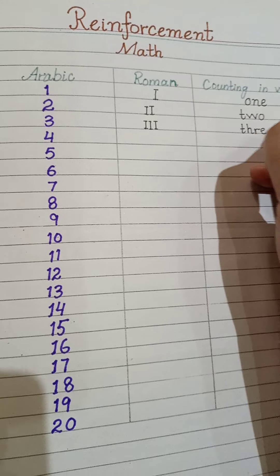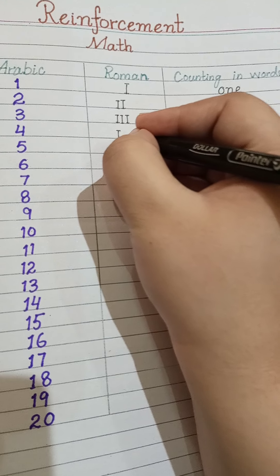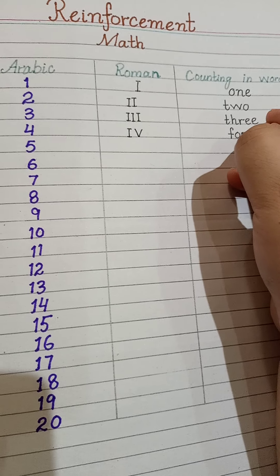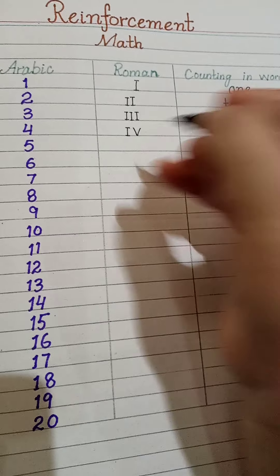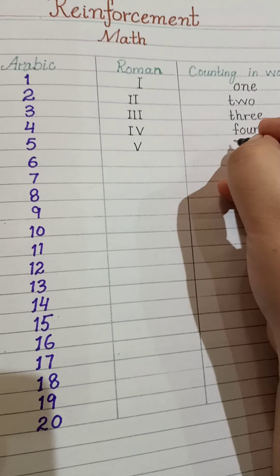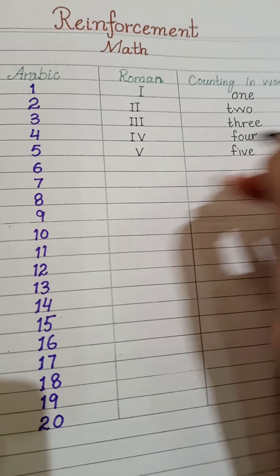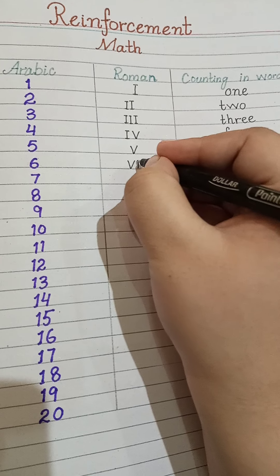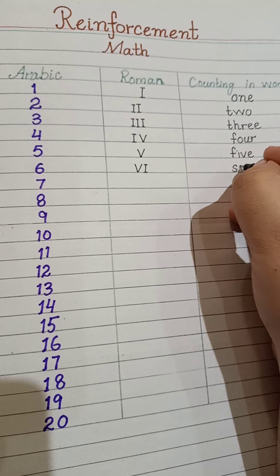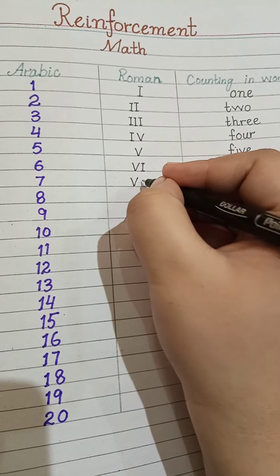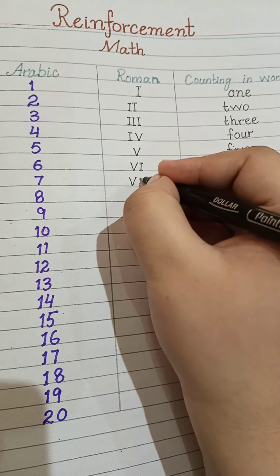4 — F-O-U-R. 5 — F-I-V-E. 6 — S-I-X. 7 — S-E-V-E-N.